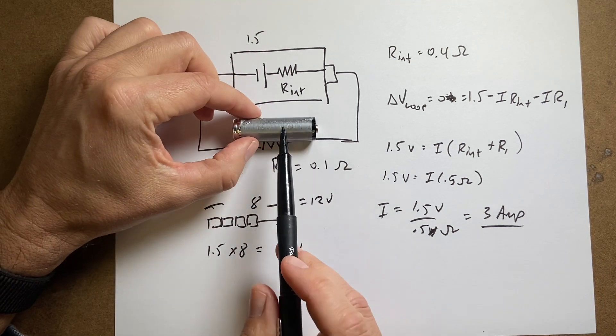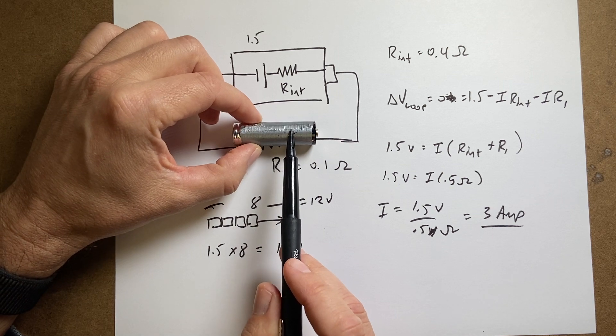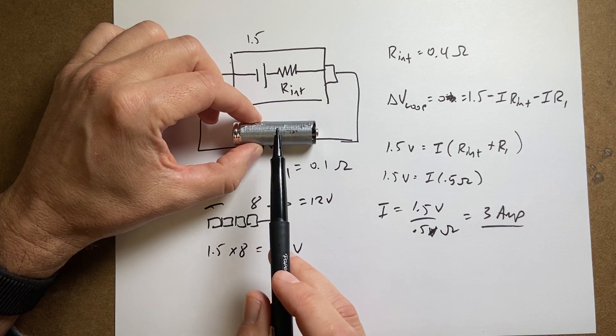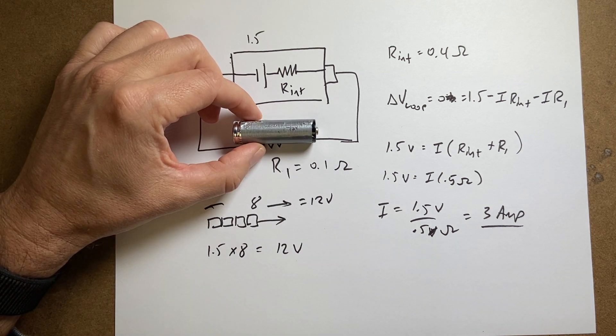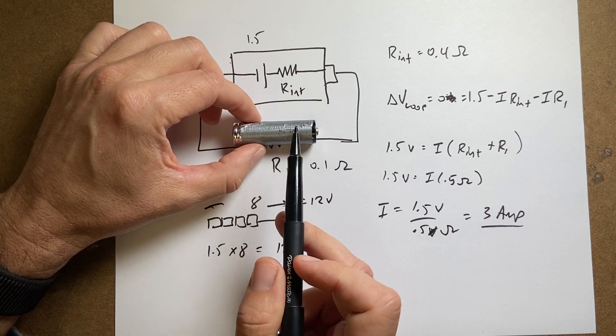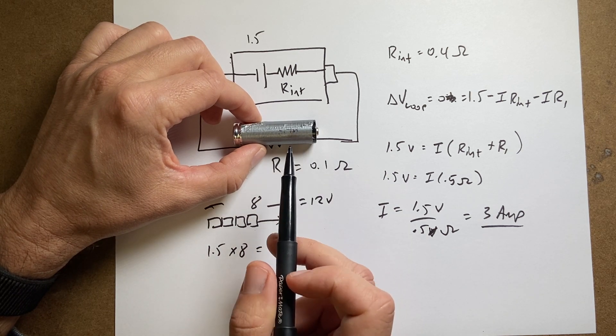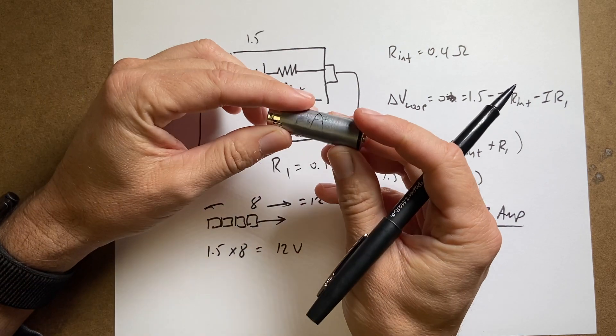But if each one of these has an internal resistance of, let's say, 0.4 ohms, and you get 8 of them together, then you're going to get a significant internal resistance. And you're not going to get that 5 amps of current out of there. So that's why we can't do that.